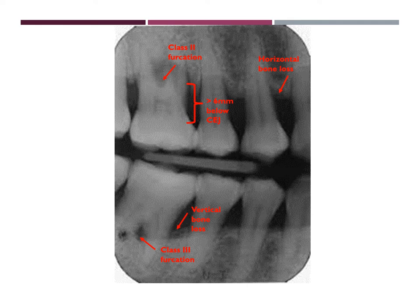In this bitewing, you can see the class 3 furcation on tooth number 30 as well as the class 2 furcation on tooth number 3. On that same tooth, you can see bone loss greater than 6 mm below the CEJ. There is horizontal bone loss on the anterior maxillary arch, and vertical bone loss closer to the posteriors of the mandibular arch.